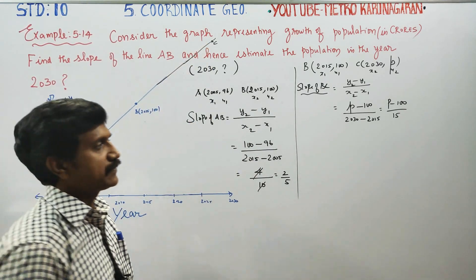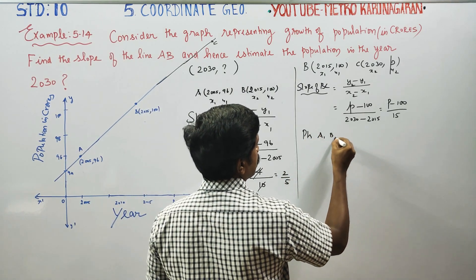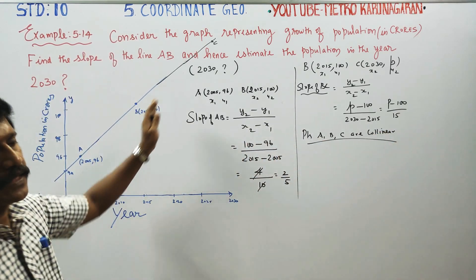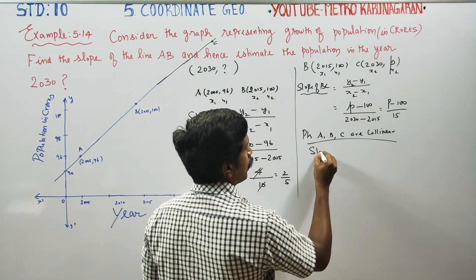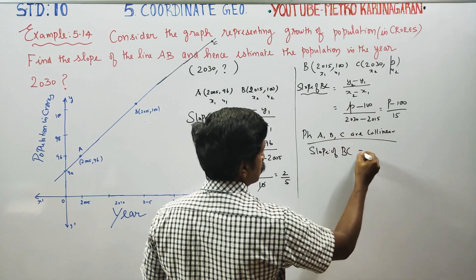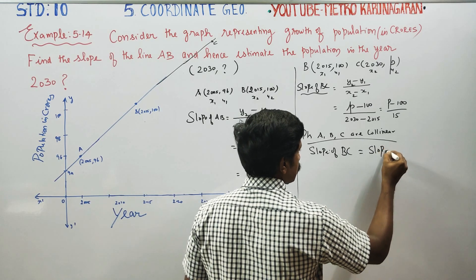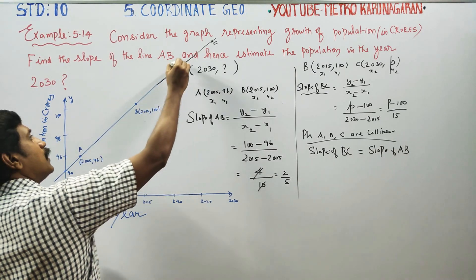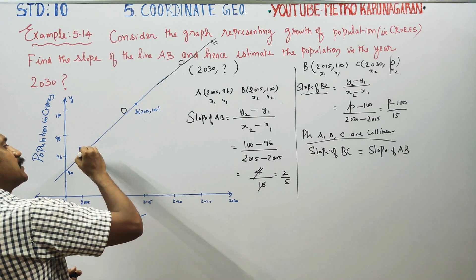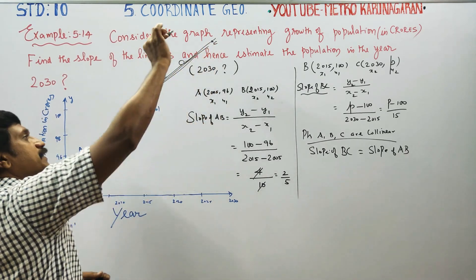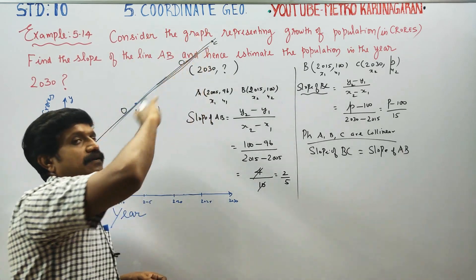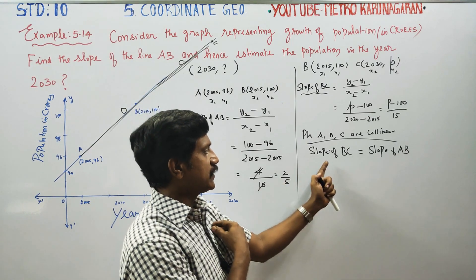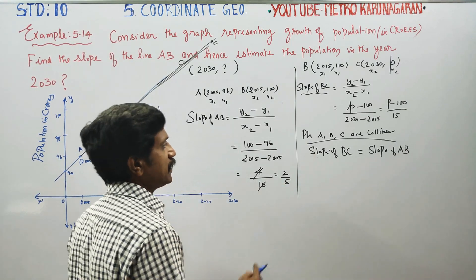Points A, B, and C lie on the same straight line — they are collinear, as seen from the graph. Since the points are collinear, slope of AB is equal to slope of BC.